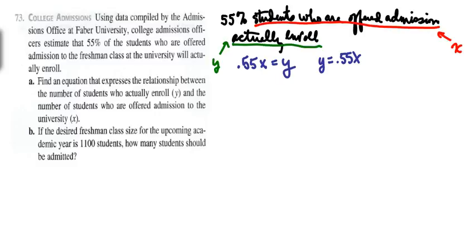So once again, students who are offered admission, that's X. Actually enroll, that's Y. So we want those who actually enroll, we want Y to equal 1,100, and we want to find out what X should be in that case.